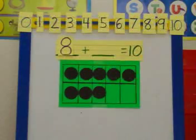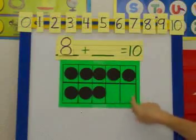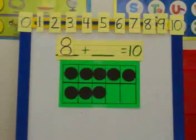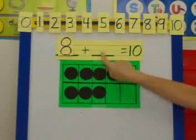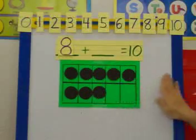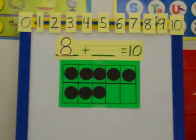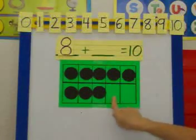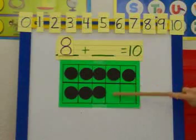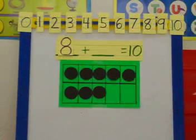Now the second step is to figure out what different color dots do I need to find my missing number to complete my 10. So if I count these empty spaces, I have 1, 2 empty spaces.